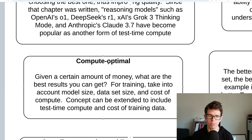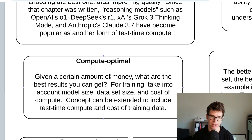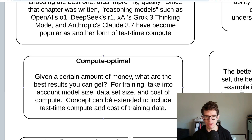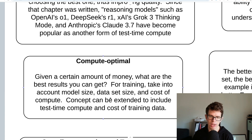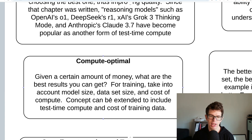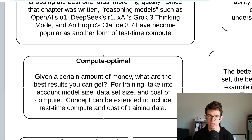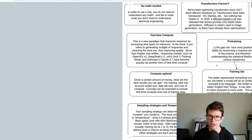Following on from that is the idea of compute optimal — basically, for a given amount of money, what are the best results you can get? You can discuss this for training, for inference, and they can be combined with training amortized over the amount of usage in inference. There's a ton you can go into there, so we're going to call it out of scope for this video.